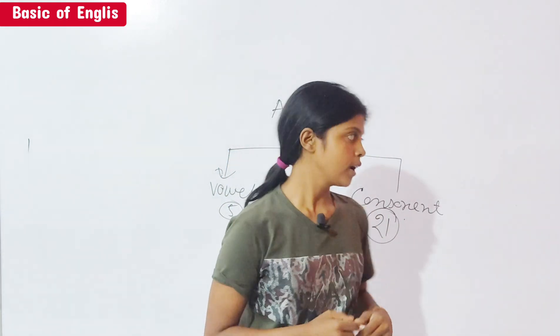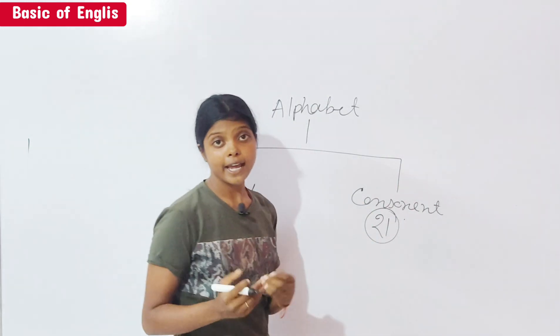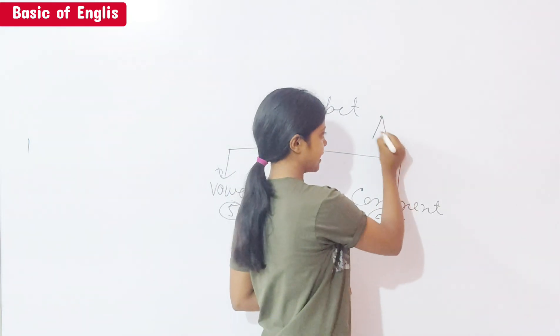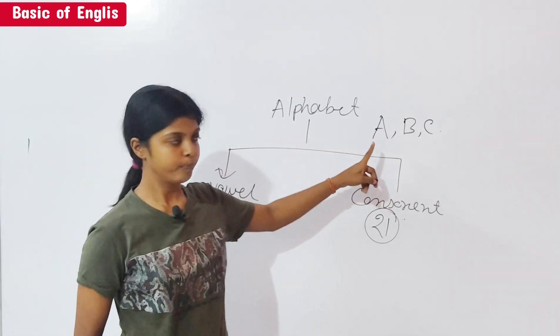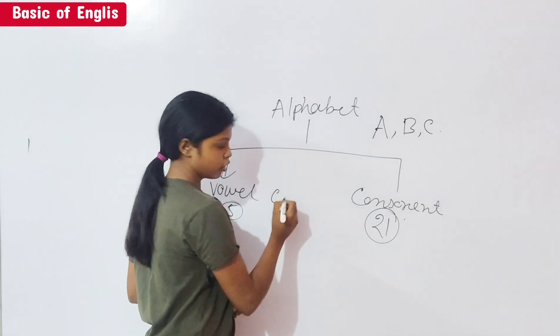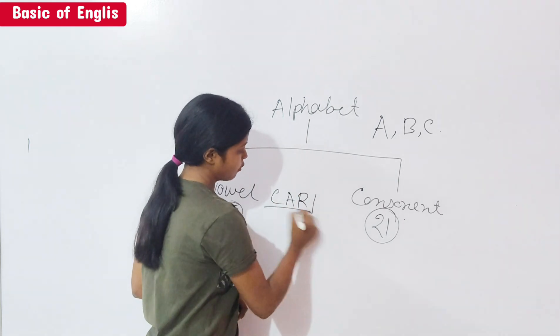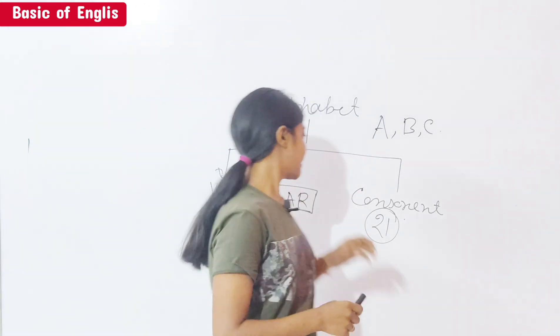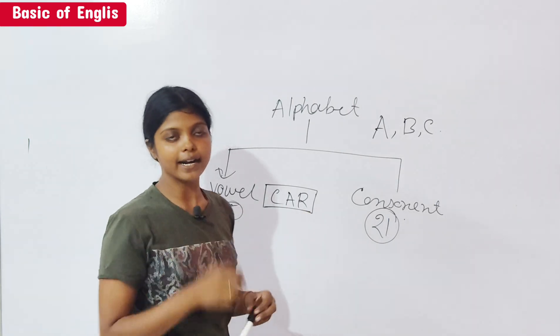A, B, C. So A, B, C, and A, B, C. This is A, B, C. C, A, T - CAT. R - CAR.